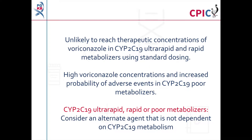Due to the low probability of CYP2C19 ultra-rapid and rapid metabolisers reaching therapeutic concentrations of voriconazole using standard dosing, and the increased probability of adverse effects caused by high voriconazole concentrations in CYP2C19 poor metabolisers, the guideline recommends the use of alternative therapies in these patients.